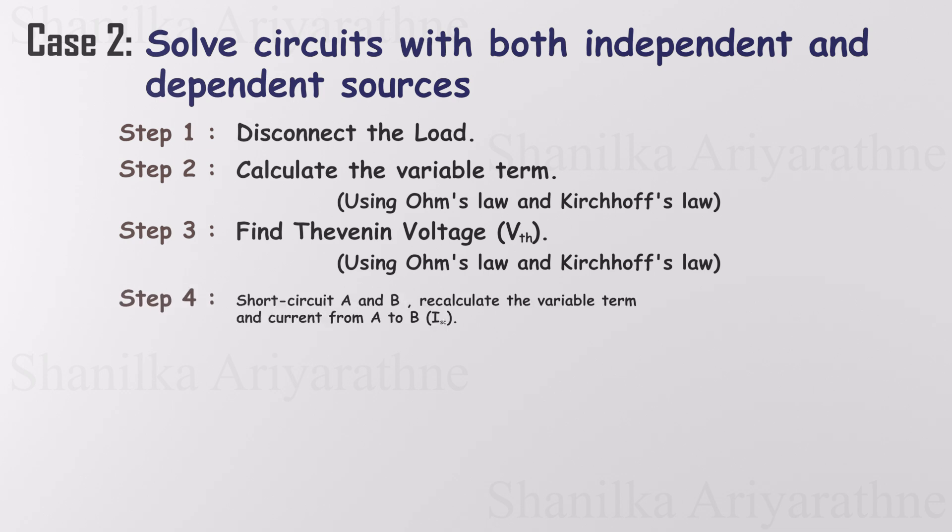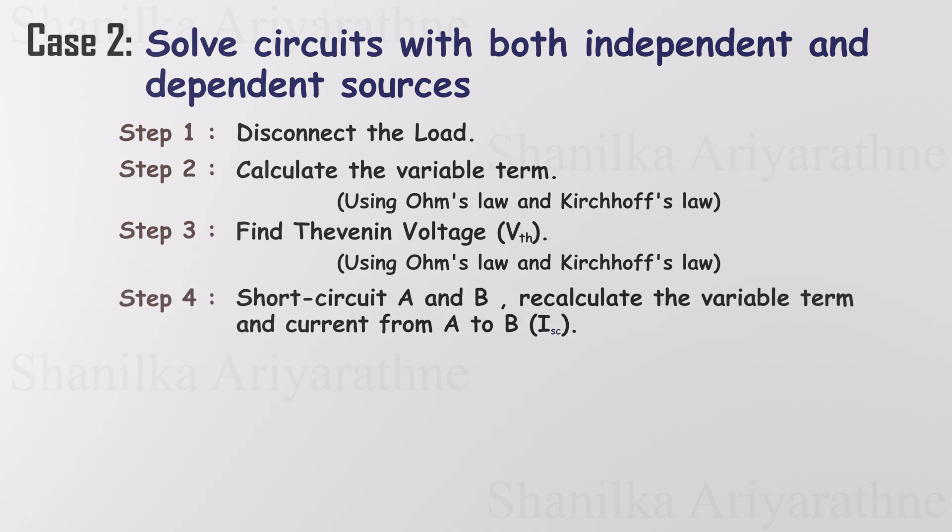Next, short circuit terminals A and B by connecting them with a wire. Recalculate the variable term for any dependent sources to account for this new condition. After that, calculate the short circuit current flowing from A to B.